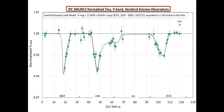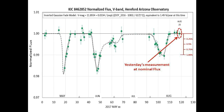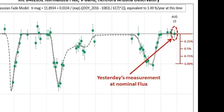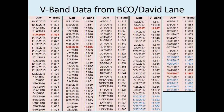This is the normalized light curve of Tabby Star in the V-band, updated yesterday August 25th. This is the normalized flux line, which is synonymous with the accelerating long-term dimming curve. Yesterday's measurement shows we are still at the nominal flux level, and today is also showing we are still tracking on the nominal flux line.